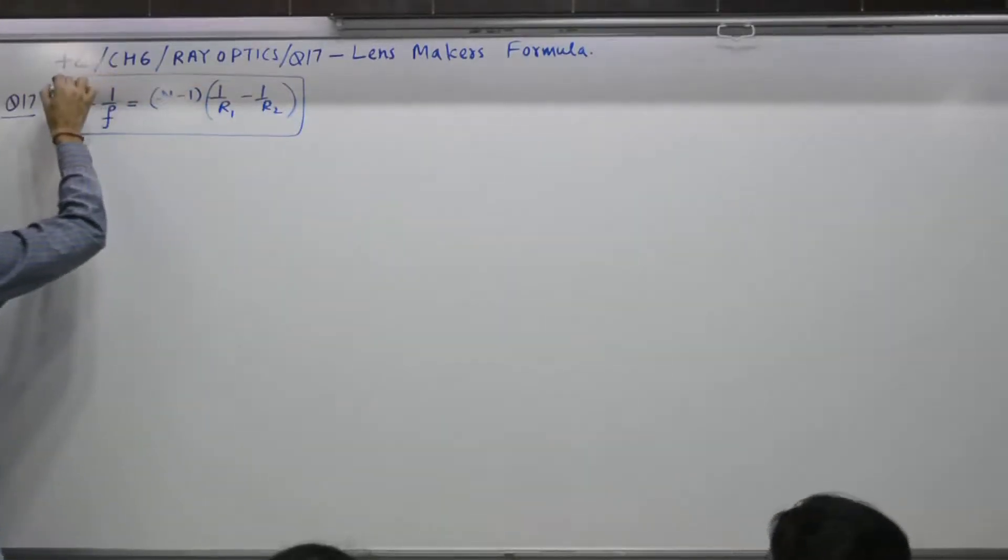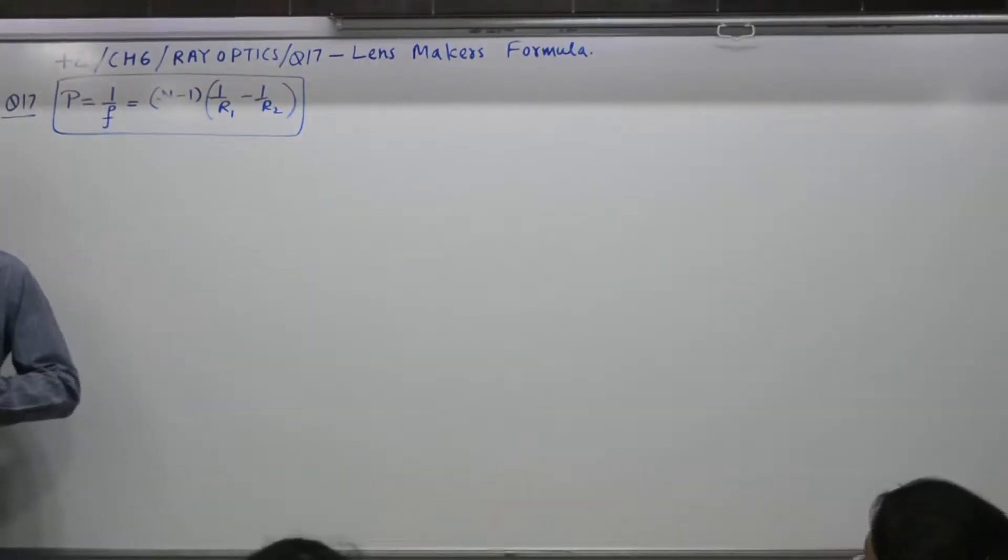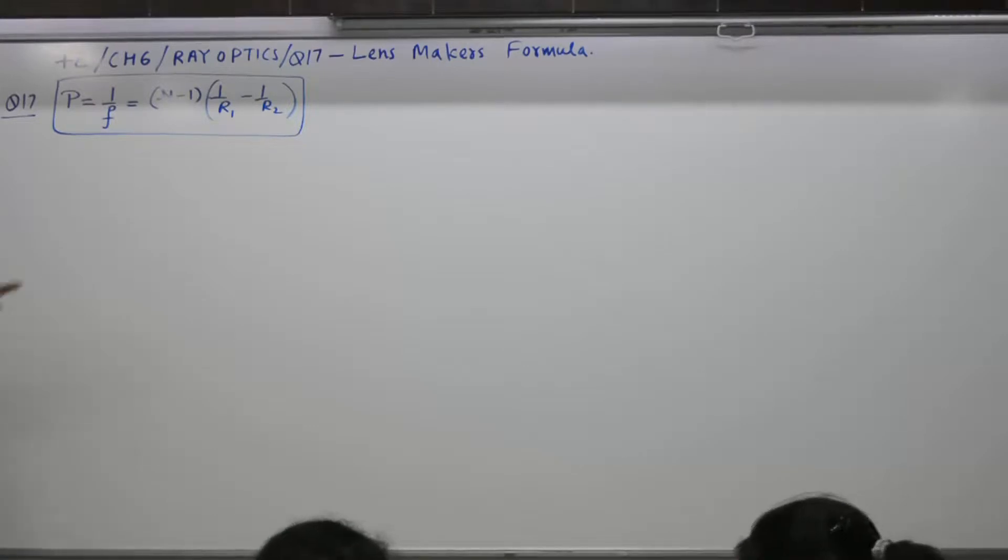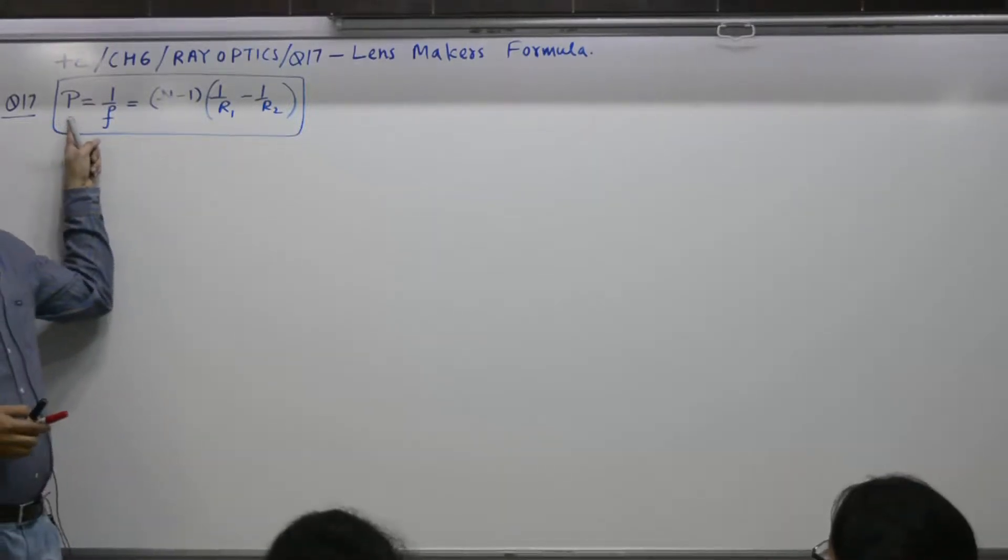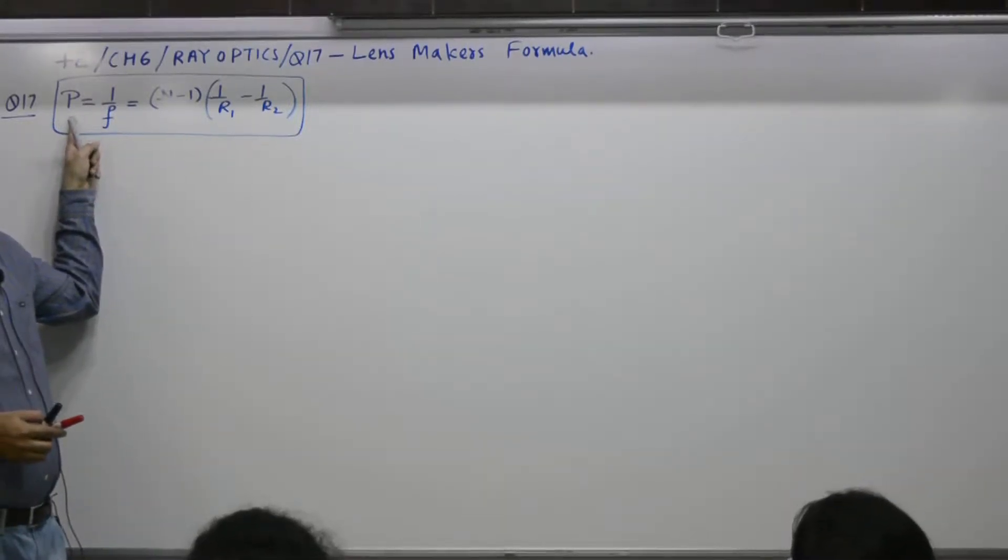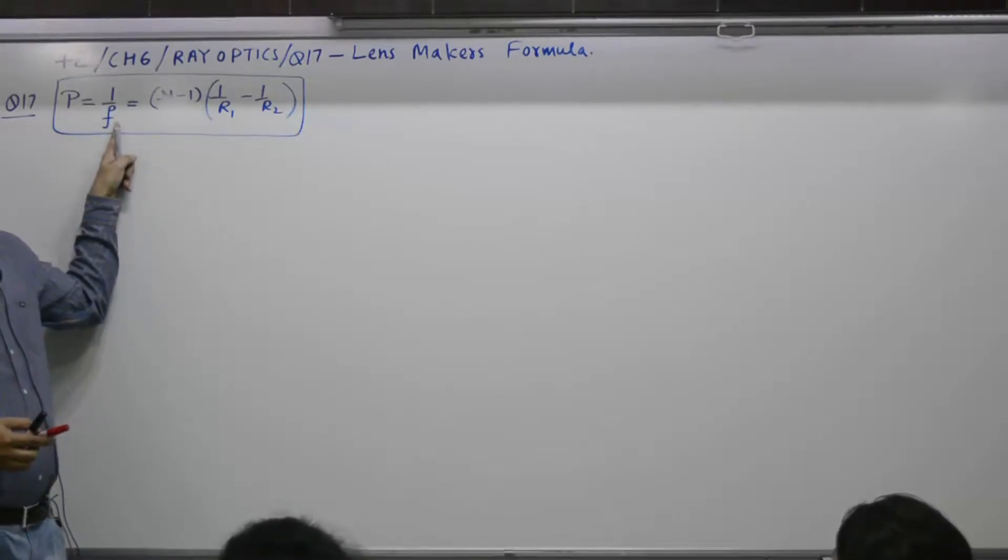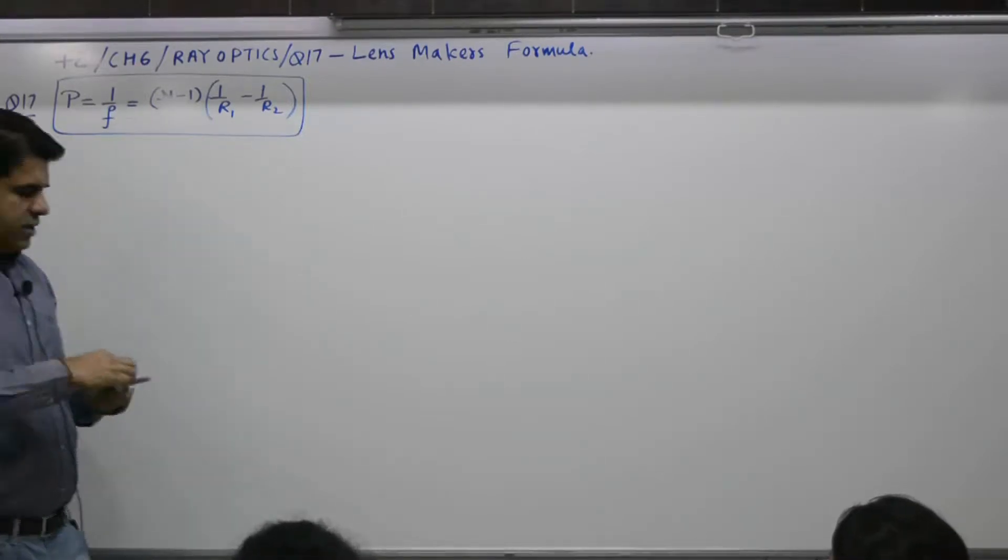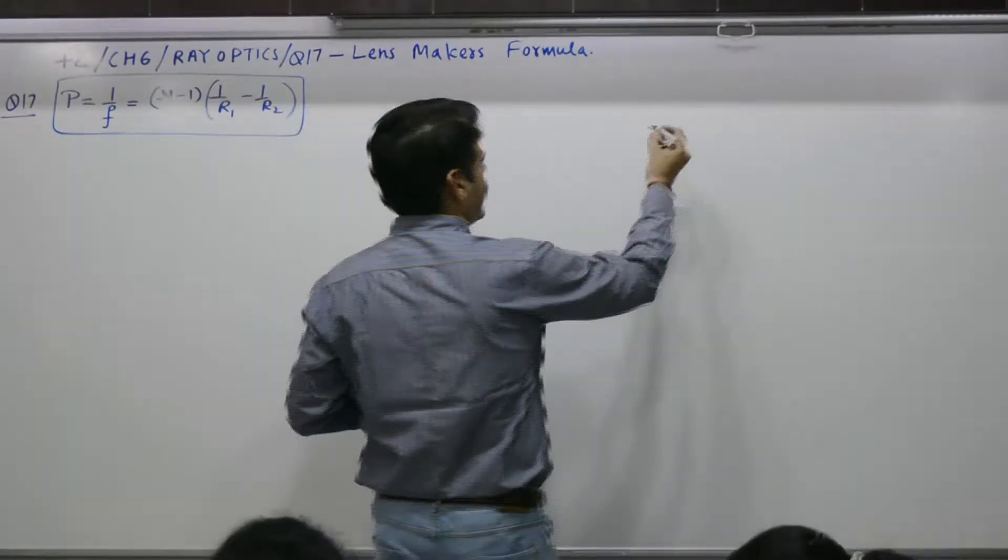Before we prove, what does it mean? It means you want to design a lens of certain power or certain focal length. Then what you need to know is material, that is what the formula deals with.